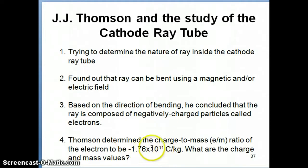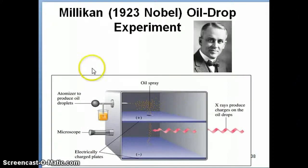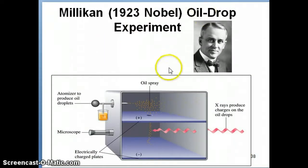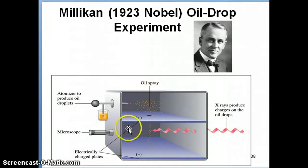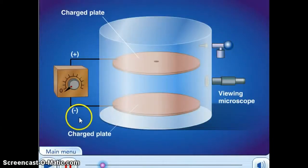We can't just use the charge-to-mass ratio because that doesn't tell us exactly what the charge and mass of the electron are individually. So now we're going to move on to Millikan's experiment, often called the oil drop experiment. This was the experiment that allows us to calculate the mass of the electron, because Millikan was able to use it to determine the charge of an electron.